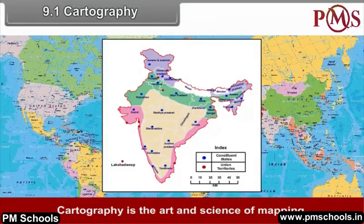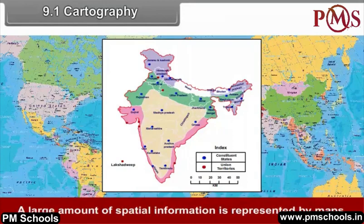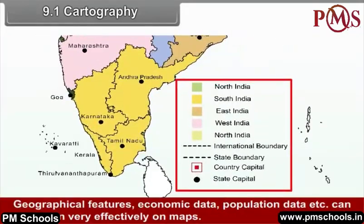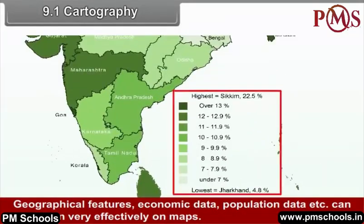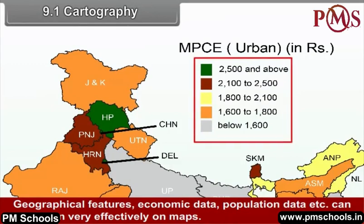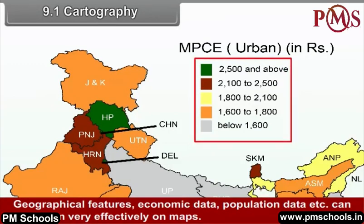Cartography is the art and science of mapping. A large amount of spatial information is represented by maps. Geographical features, economic data, population data, etc. can be shown very effectively on maps.